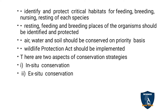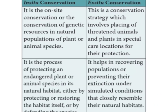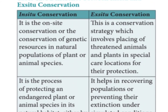There are two aspects of conservation strategies: in-situ conservation and ex-situ conservation. In-situ conservation is an on-site conservation, or the conservation of genetic resources in natural populations of plant or animal species.